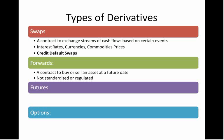Futures are actually very similar to forwards, but unlike forwards, they are standardized and regulated, and they are traded on exchanges. Futures are often used to speculate on commodities, such as oil, timber, and even orange juice — as in the movie Trading Places, where they tried to corner the orange juice markets.